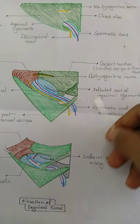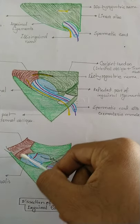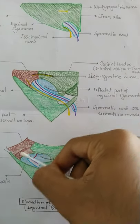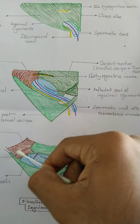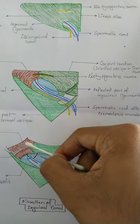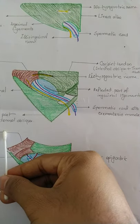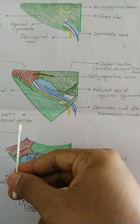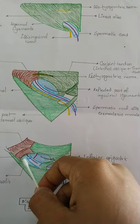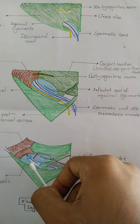In the roof, two muscles are notably marked: transversus abdominis and internal oblique. These form the lateral two-thirds of the roof of the inguinal canal. It is also important to note the fascia transversalis as part of this region.